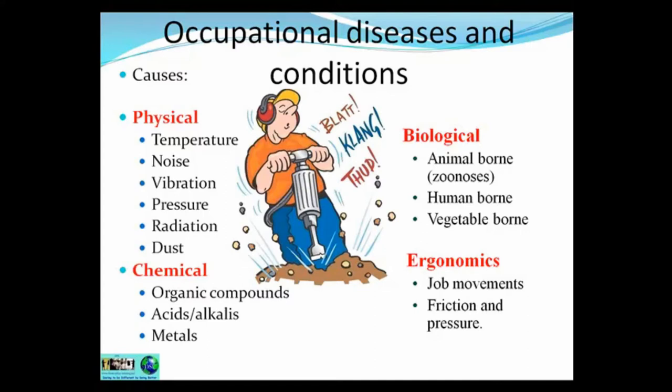radiation and dust. Chemical covers working with chemicals such as organic or inorganic compounds, acid, alkaline, and different metals. Biological covers the living entities — parasites, bacteria, protozoa, things like animal-borne zoonosis, or human-borne or vegetable-borne. And ergonomics looks at job movements, friction and pressure.